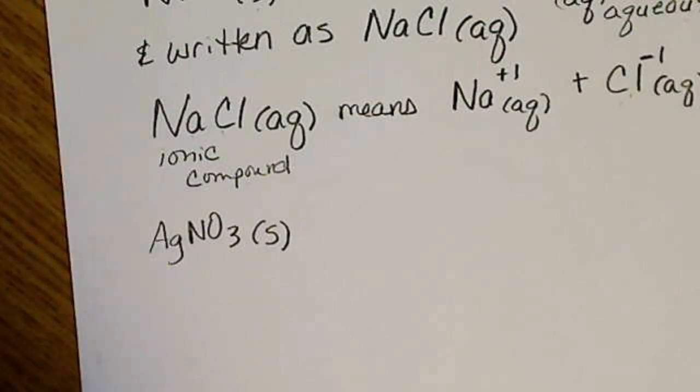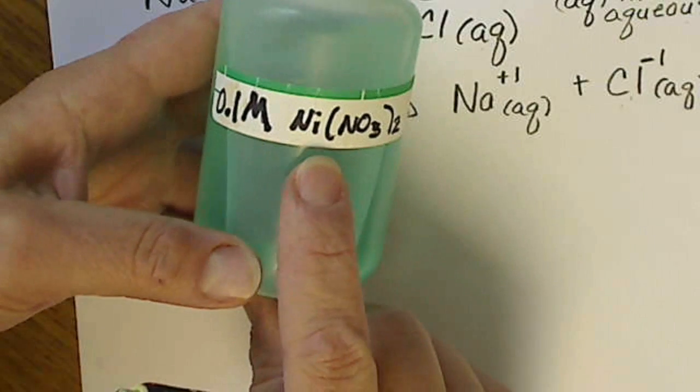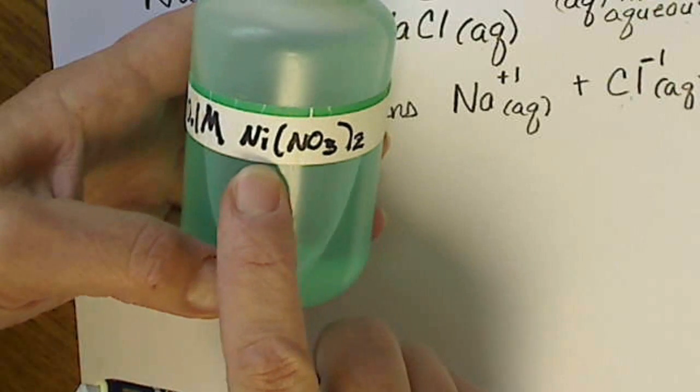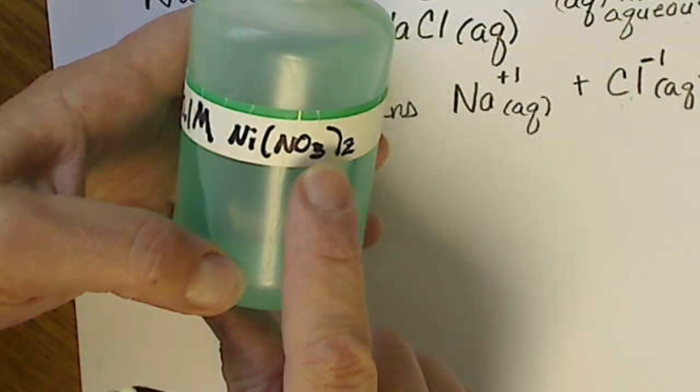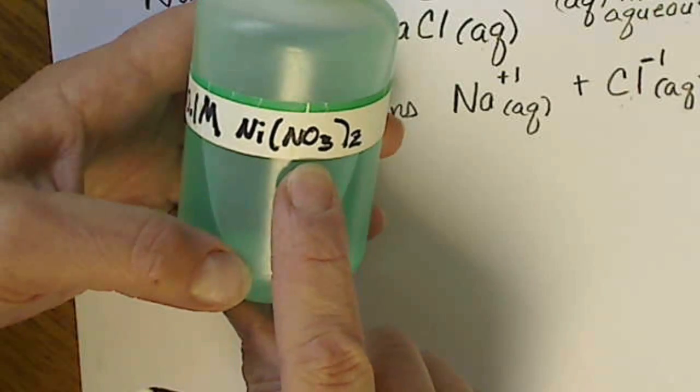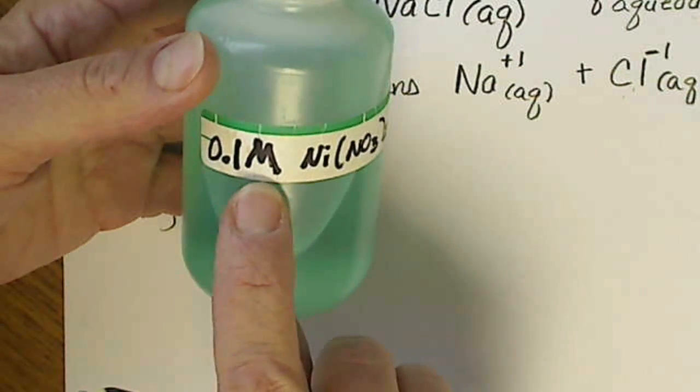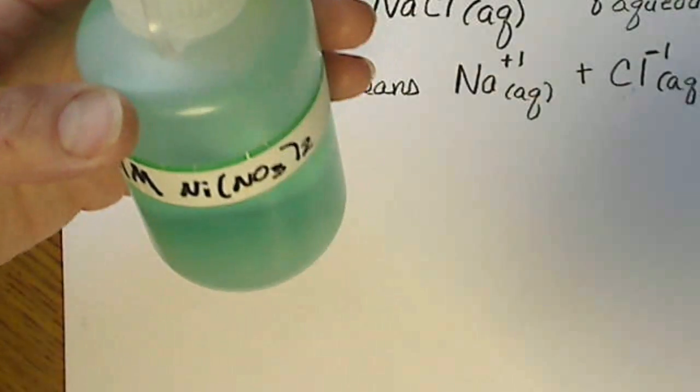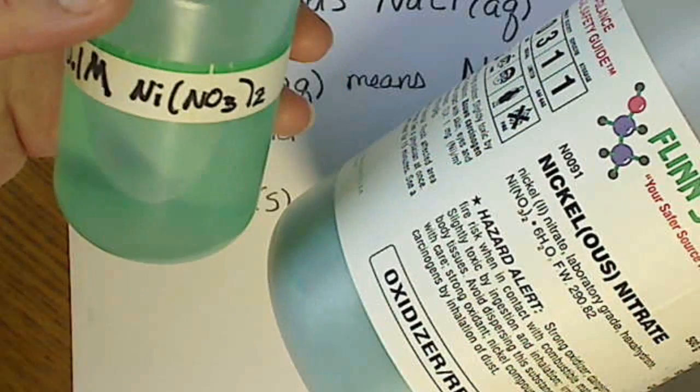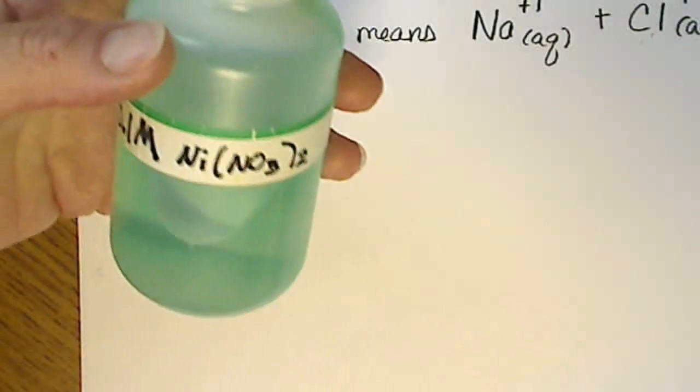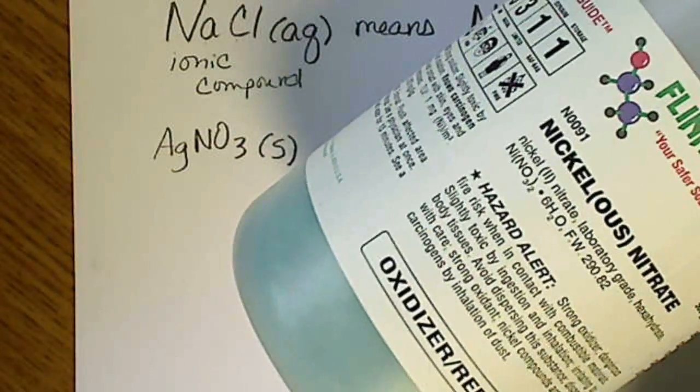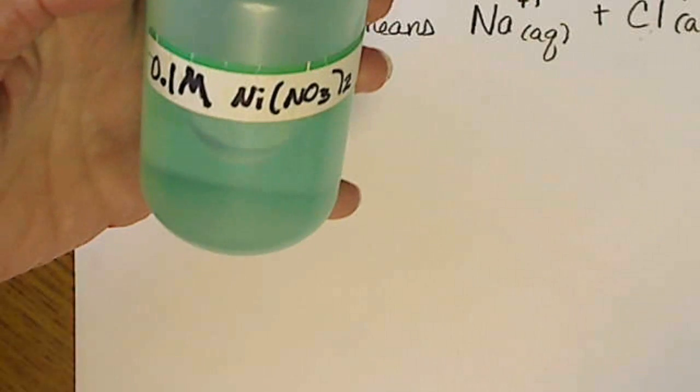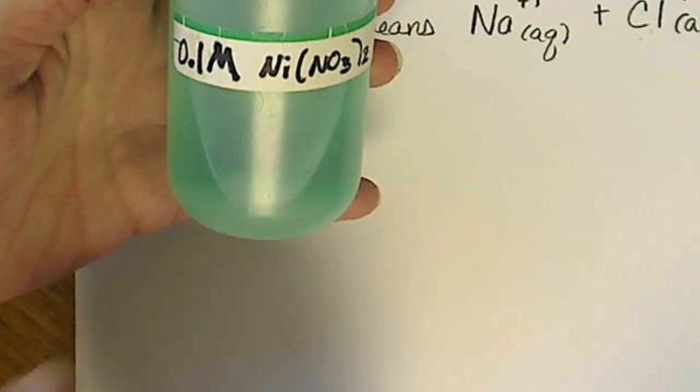Another solution that's colored is nickel. Nickel nitrate is also an ionic compound. This is nickel plus 2, so there's two nitrates there. This would be another 0.1 molar solution. Nickel nitrate just happens to be green. But again, we buy this as a solid. We can dissolve this in water so that the solid salt is the solute and water's the solvent. Then the entire thing is the solution.